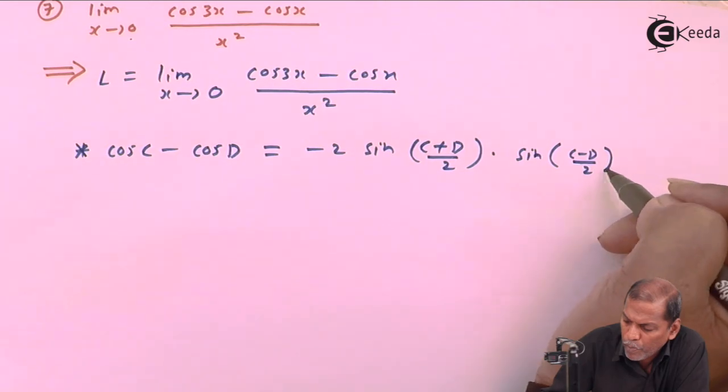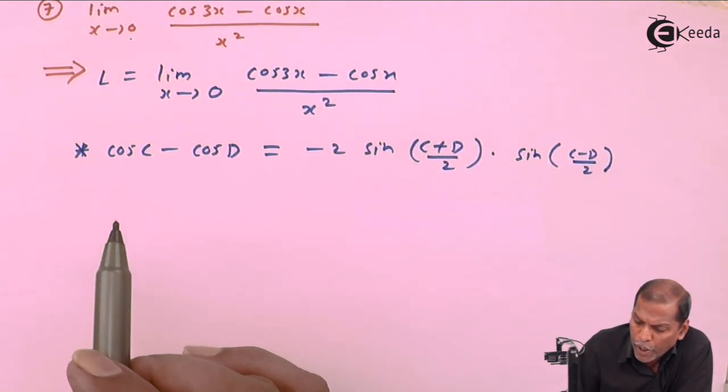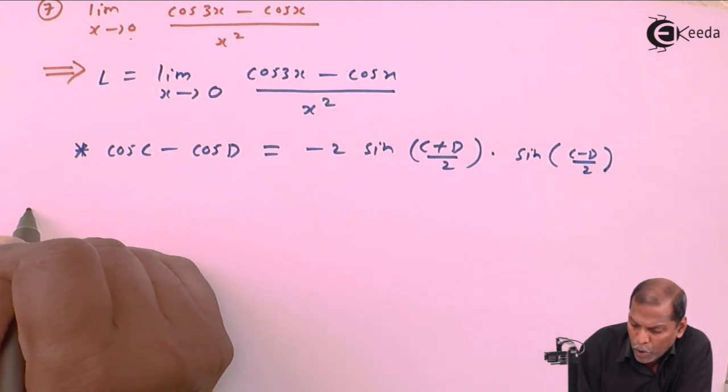in bracket C minus D upon 2. So in present case, C represents 3x and D represents x.